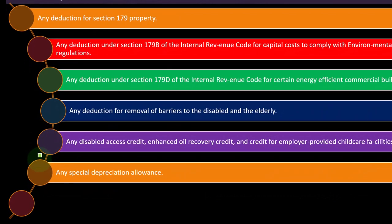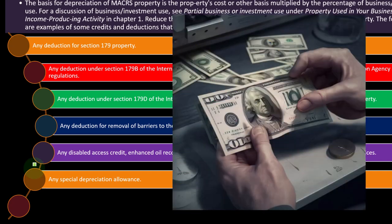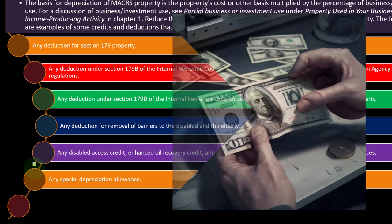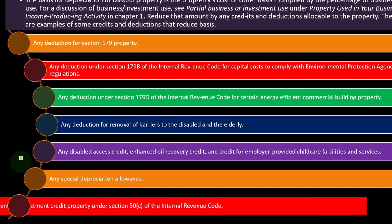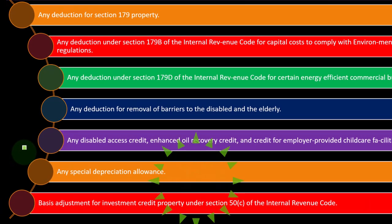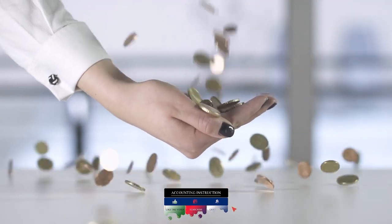Any special depreciation allowance is similar to Section 179. You can think of special depreciation as the IRS — or the politicians — saying they want to give more depreciation up front, either to stimulate the economy or because it's popular. If you get the depreciation up front, then your basis is going to be lower and you can take less of the cost allocated in future years.